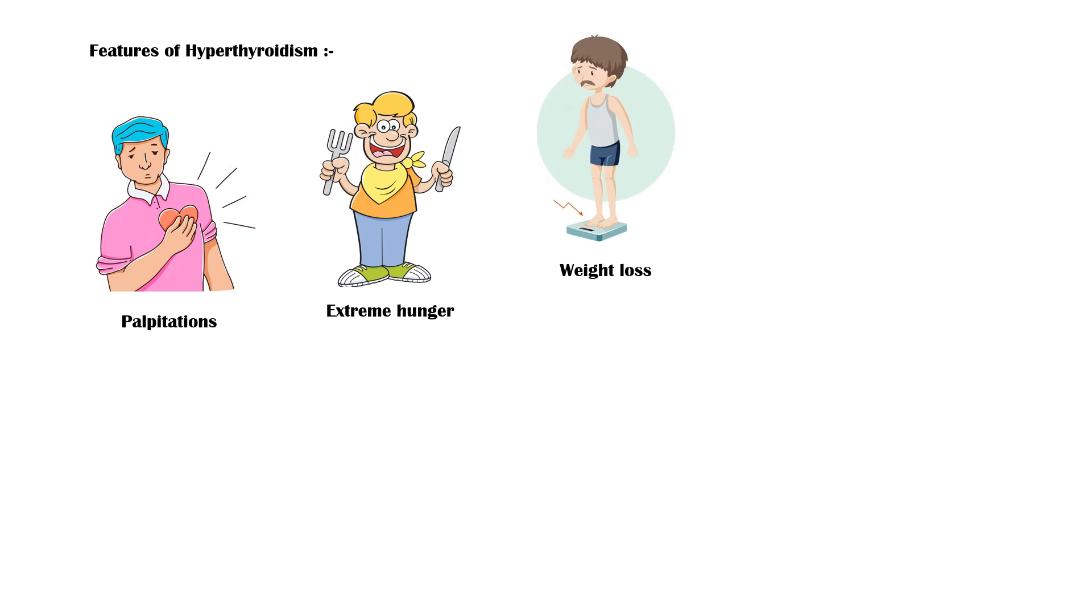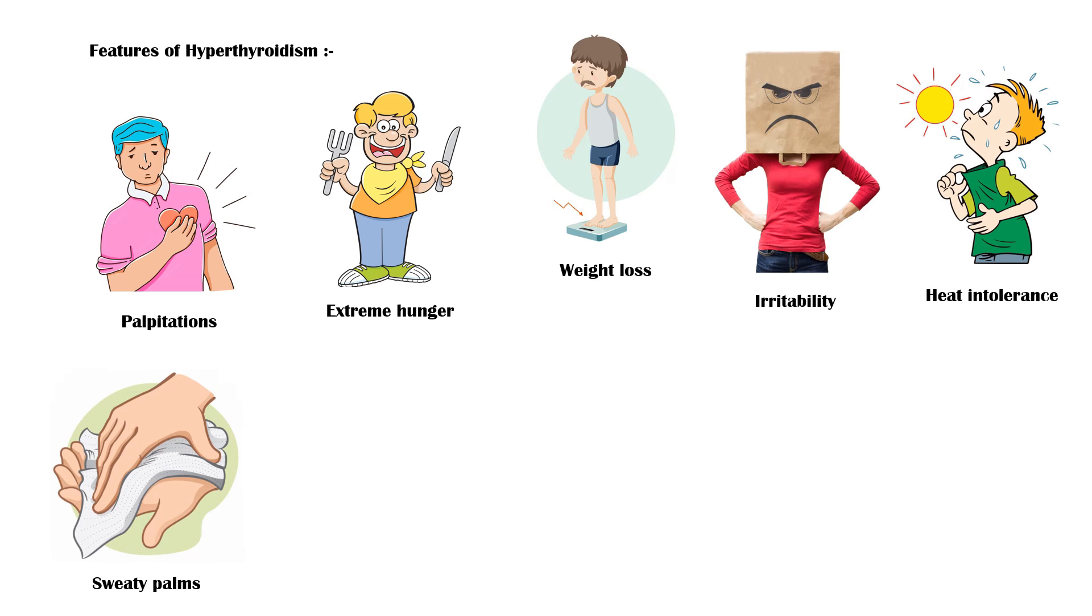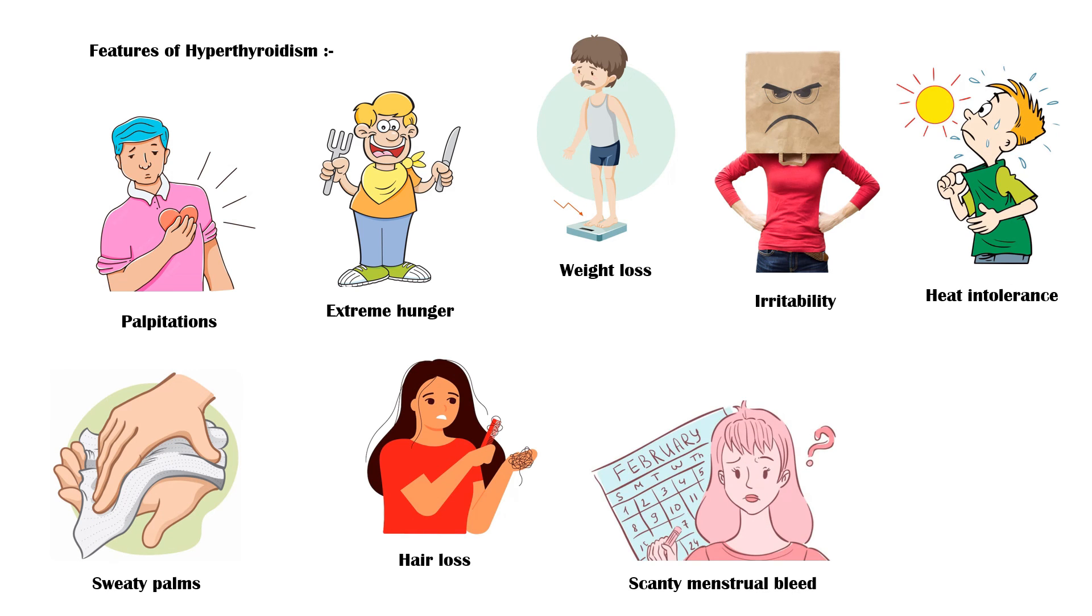Features of hyperthyroidism include the following: heart palpitations, extreme hunger, weight loss, irritability, heat intolerance, sweaty palms, hair loss, scanty menstrual bleed, and diarrhea.